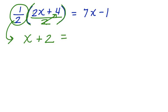Now we have an equals and we bring down the 7x minus 1. Now we've got variables on both sides of the equation and we have constants on both sides. We need to get the variables together and the constants together.